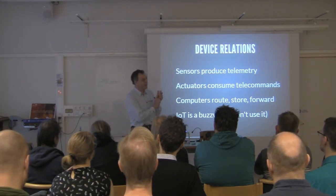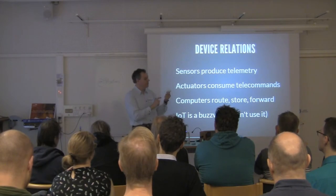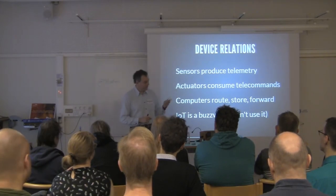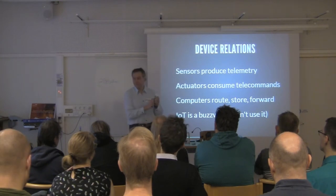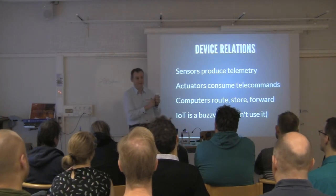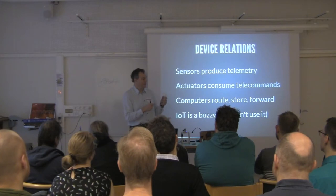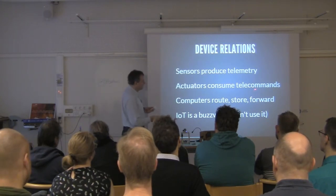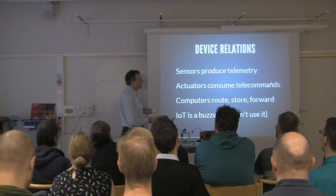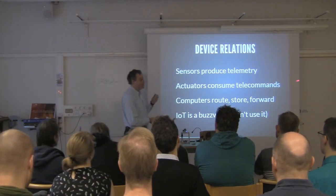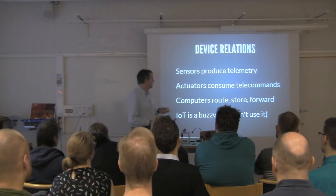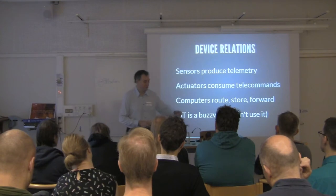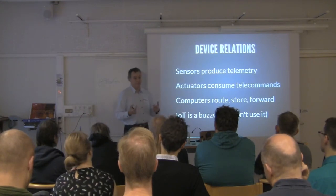Here's an example of an actuator. This is a smart lamp and it has a Zigbee transmitter inside, so it's exchanging data and receiving telecommands. Some computer somewhere is saying turn on, turn off, and change the color — and that means this is an actuator. A lot of other things, like the beacons, are sensors.